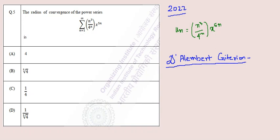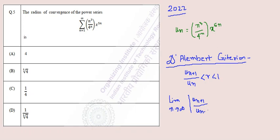If a series of positive numbers is convergent, then from and after some fixed term, the ratio test condition holds: the limit as n tends to infinity of u_(n+1) / u_n will be less than 1. We will solve this power series and find the radius of convergence using this D'Alembert criterion.